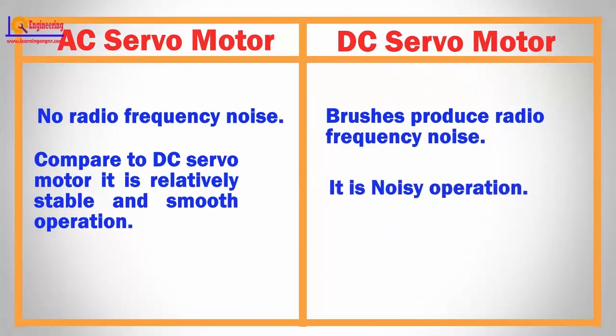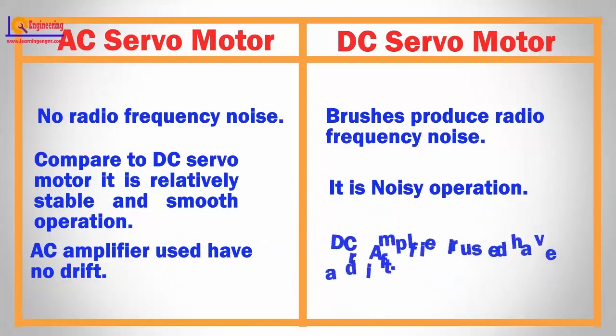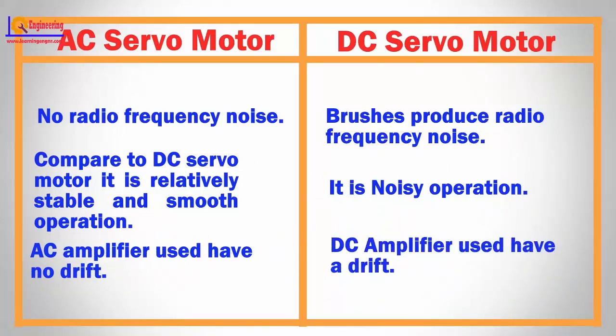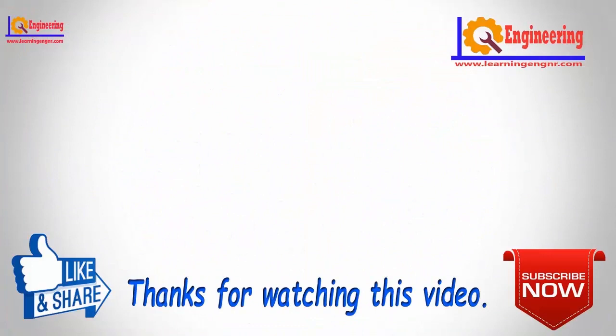DC servo motor operation is noisy. The AC amplifier used in AC servo motors has no drift, whereas the DC amplifier used in DC servo motors has drift.